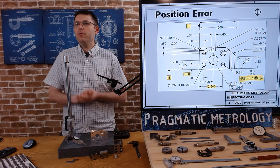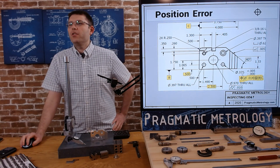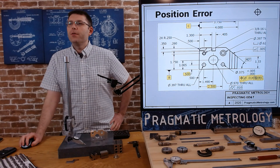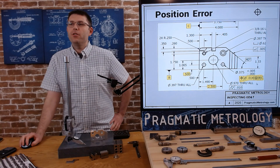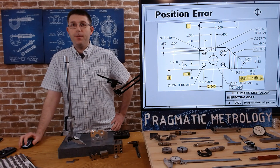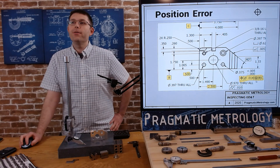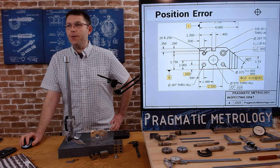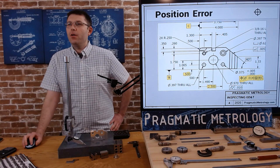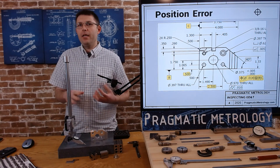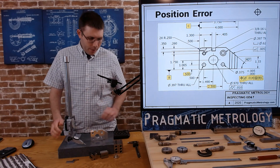Let's look at our print, zoomed in on the true position symbol. True position symbol: 14 thousandths, and there's an M in a circle here — maximum material condition — meaning bonus tolerance is allowed. Your worst case scenario you have 14 thousandths, but you potentially have an even larger tolerance zone depending on how big your hole is. We're referencing datums B and C, with nominals of 0.5 in Y and 2.5 in X.